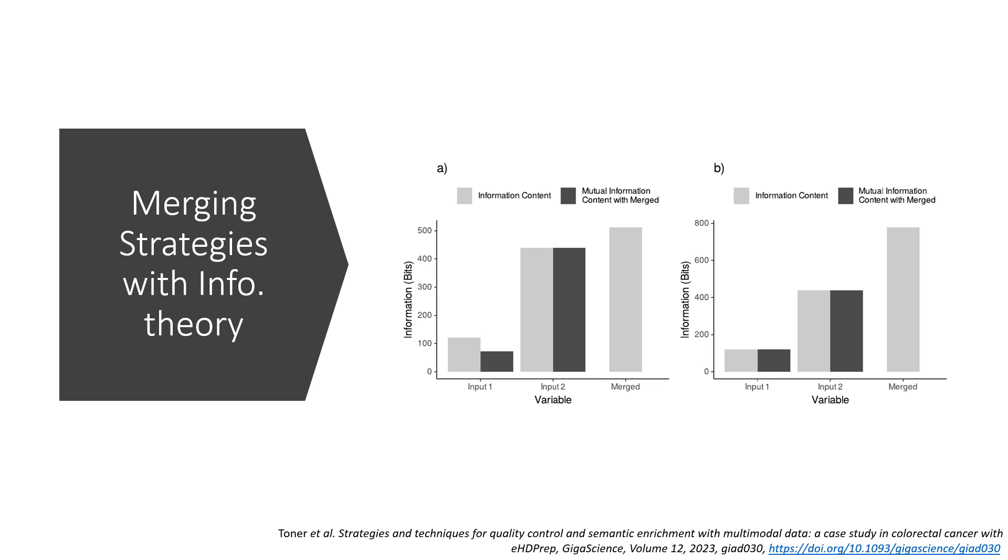Conversely, merging operation B shows no information loss will occur, as there is no difference between the mutual information with the merged variable and the information content of either input variable.